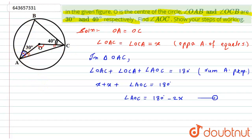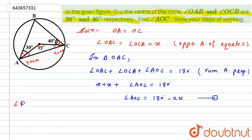Now, in the bigger triangle ABC, angle BAC will be 30 plus x (since angle OAB is 30 and angle OAC is x), and similarly angle BCA will be 40 plus x.